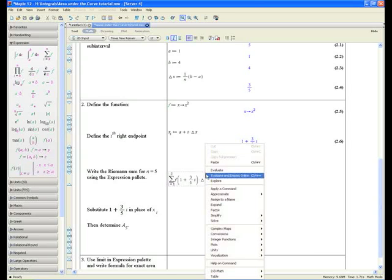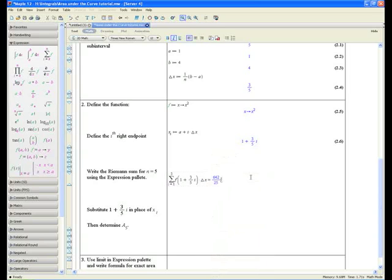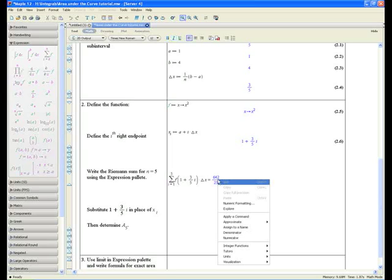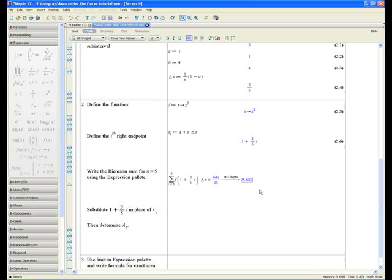And then using the context menu, you can go to evaluate and display inline. And in a fraction, it equals 642 over 25. Context menu again. Approximate. And click 5 to approximate it to 5 digits. And you can see again that through first principles, we have achieved the same answer, 25.680, just like the way we got it through the Riemann sums method.